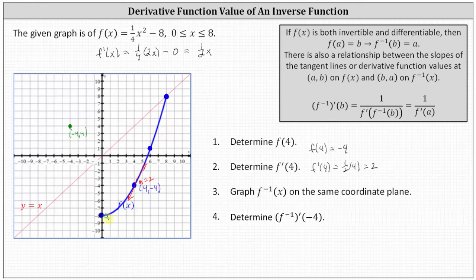Let's find the ordered pairs for these points. We have 0 comma negative 8, we have 6 comma 1, and we have 8 comma 8. So because the point 0 comma negative 8 is on the graph of f of x, negative 8 comma 0 must be a point on f inverse of x. Similarly, if the point 6 comma 1 is on f of x, the point 1 comma 6 must be on f inverse of x. And finally, if 8 comma 8 is a point on f of x, 8 comma 8 must also be a point on f inverse of x. Let's go ahead and sketch f inverse of x in green, which must pass through these four points.